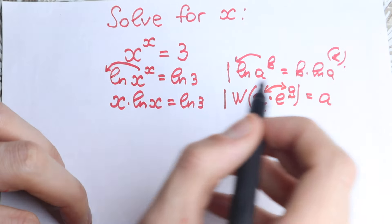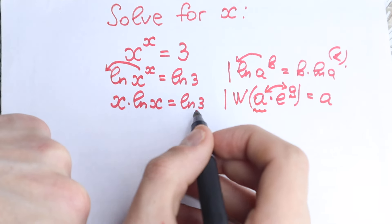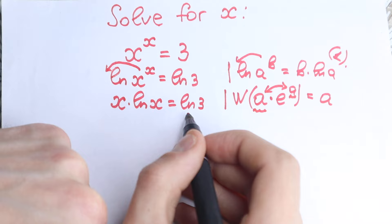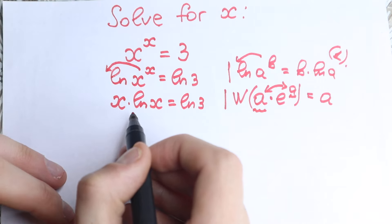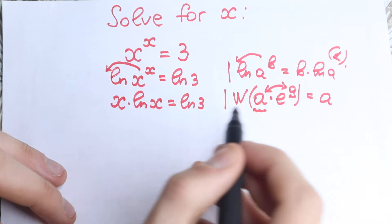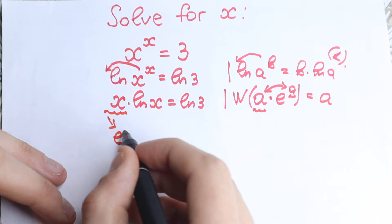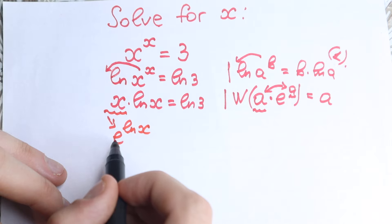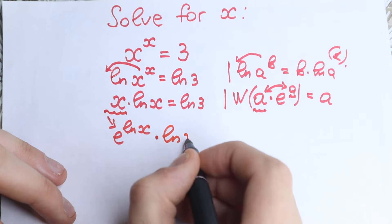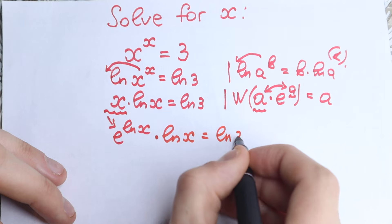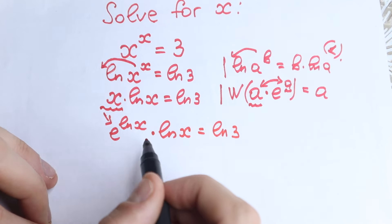Now let's look at our expression x times ln(x) = ln(3). We don't yet have the form needed for Lambert W. On the left hand side, we can rewrite x as e to the power ln(x), because e^(ln x) is identically equal to x. So we get: e^(ln x) times ln(x) = ln(3).